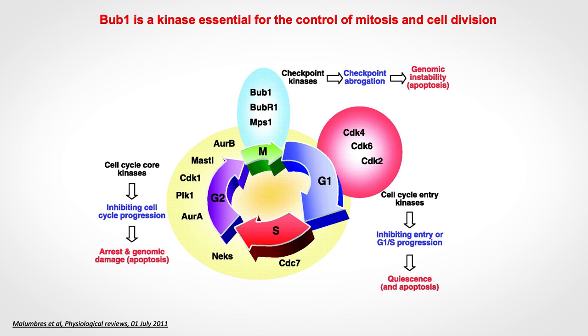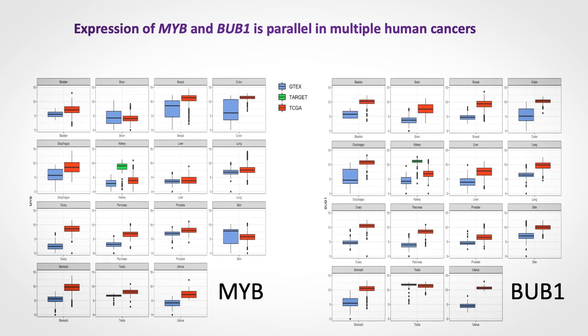BAB1 is a kinase involved in the cell cycle, specifically in the M phase or mitosis, during which the cell divides. In the absence of BAB1, there is a problem especially for cancer cells compared to normal cells because cancer cells replicate much faster. We therefore think there is a therapeutic opportunity by targeting BAB1 in cancer.